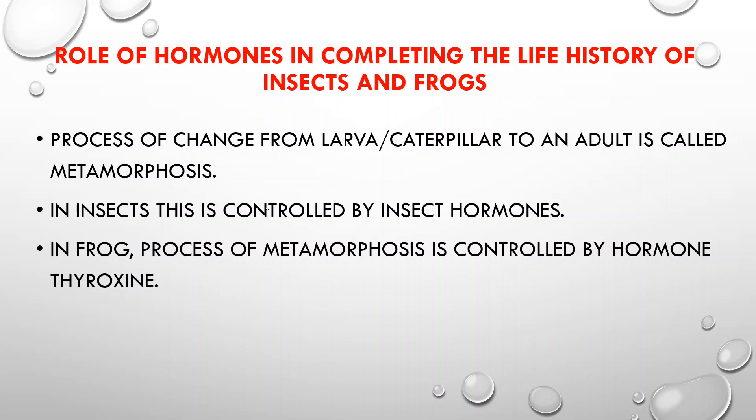The caterpillar larva develops biting parts, a small eye, three pairs of jointed legs, and false legs. After that, wings, eyes, and legs develop further. We call this stage the pupa, and the pupa becomes the adult butterfly. This process of change from larva or caterpillar to adult is called metamorphosis.